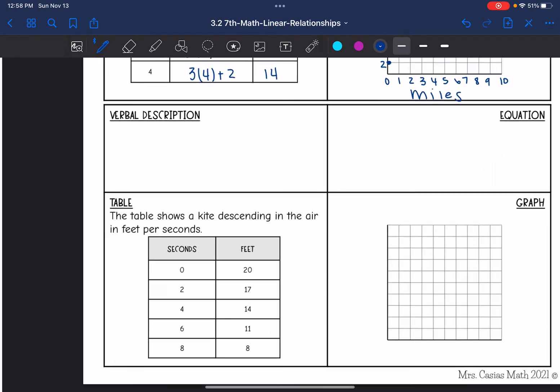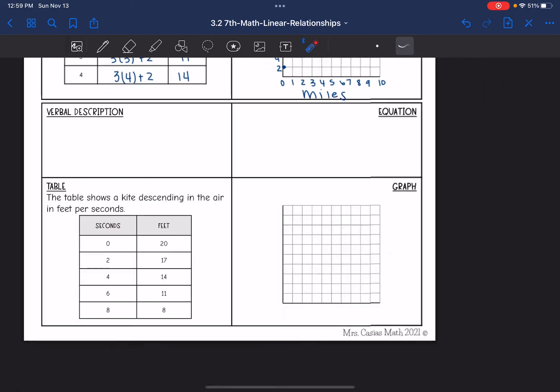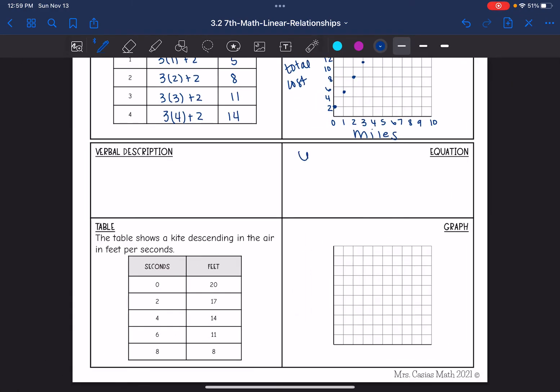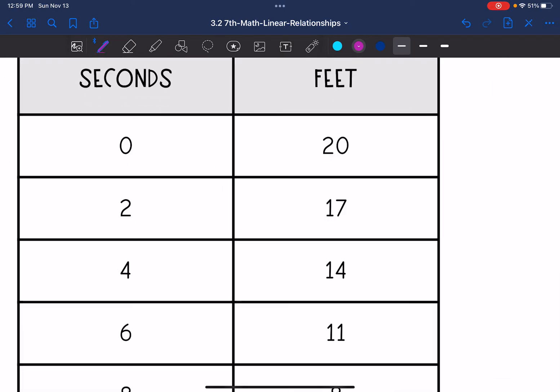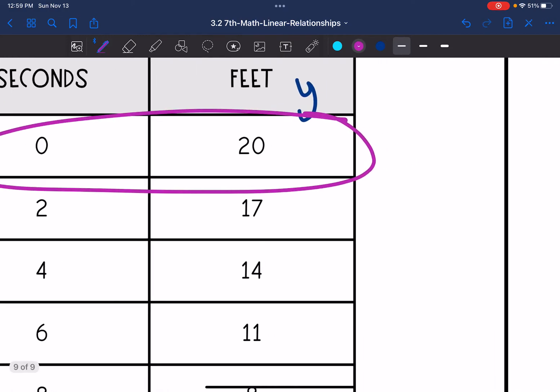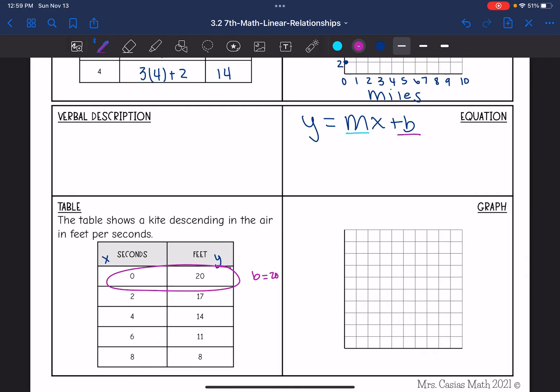They gave us a table, and it says the table shows a kite descending in the air in feet per second. So I'm going to take this information from the table and see if I can transfer it to an equation first. And I need two things to write the equation in y equals mx plus b form. I need the rate of change, and I need the y-intercept. And remember, the y-intercept is where x is 0. x would be seconds, and feet would be y. So here is the y-intercept. It is 20.